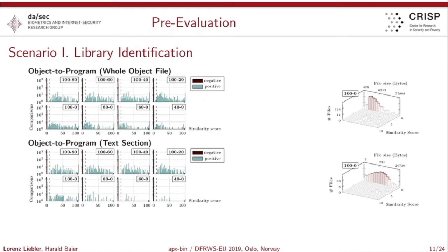The evaluation proved our expectations. If you want to match a library or a code fragment, focusing only on code fragments yields very good score distributions. As you can see, the top-left corner of the plot, where we focus only on the code fragments, performs considerably better than if you focus only on the data fragments.